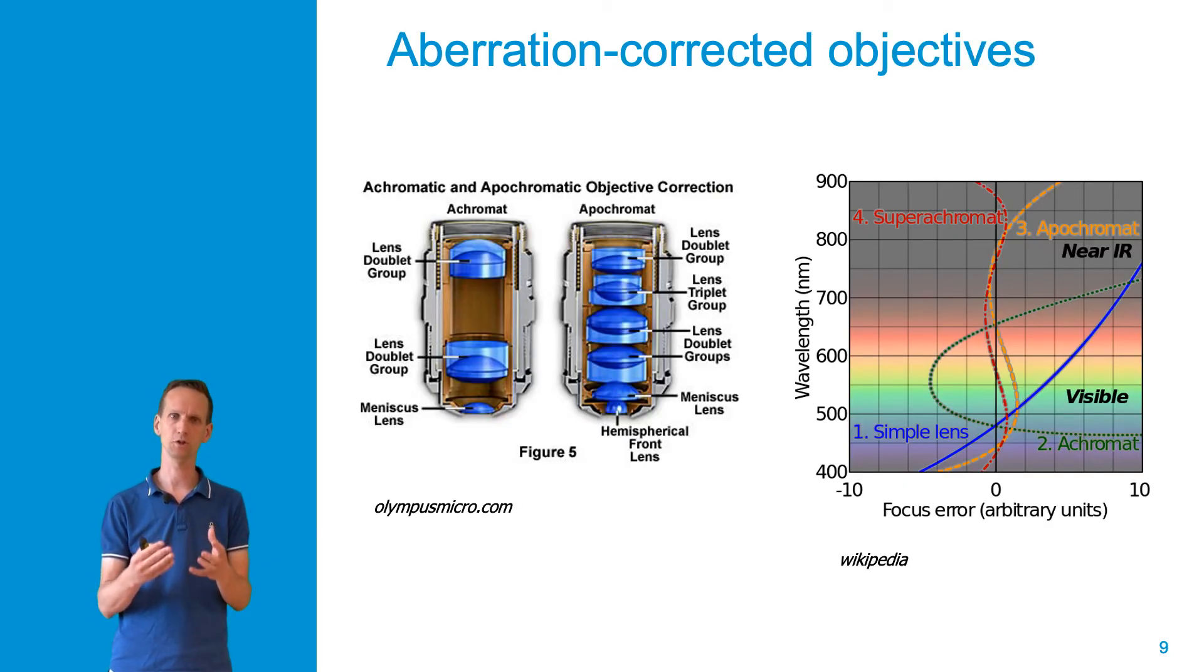Current objective lenses consist of an array of lenses placed behind each other in order to correct for all these aberrations. We can distinguish, based on the number of wavelengths that are corrected for, between achromatic lenses and apochromatic lenses and other ones. You see some examples depicted here.